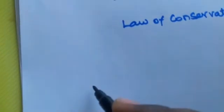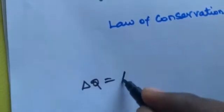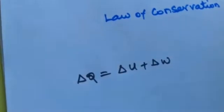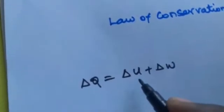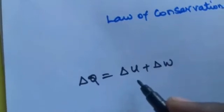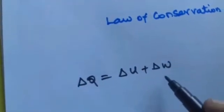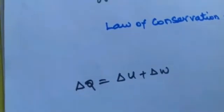We all know that del Q is heat change. That is, del Q is equal to del U plus del W. Del U is the change in internal energy. Del W is the work done by gas or work done by anything.